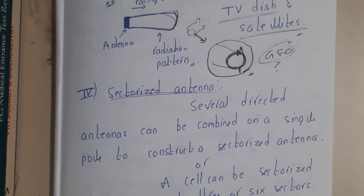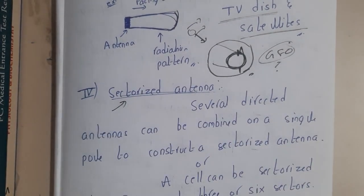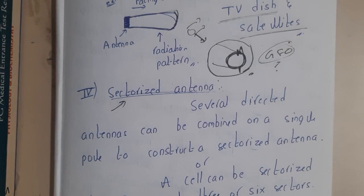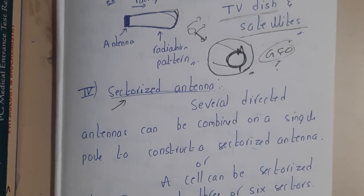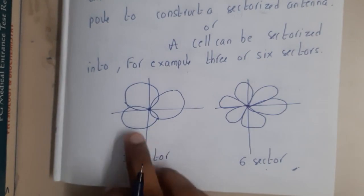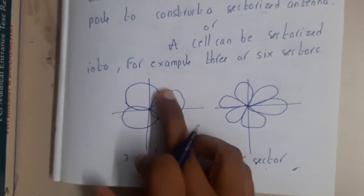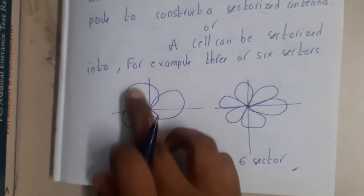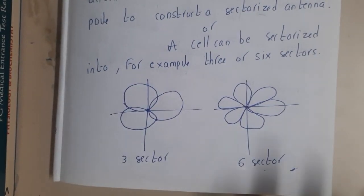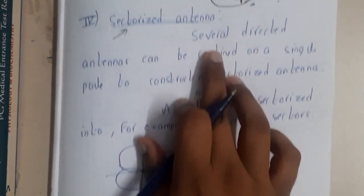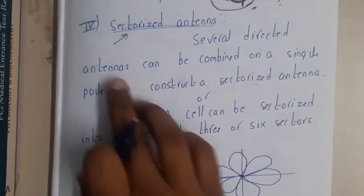The next type is the sectorized antenna. From the name you can say there is some concept of sectors. Here we use the concept of sectors — we divide our area into sectors, and based on that area we divide the signals.